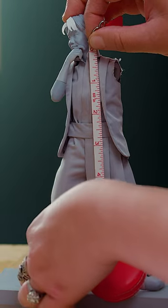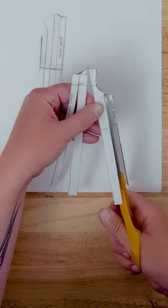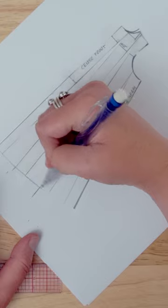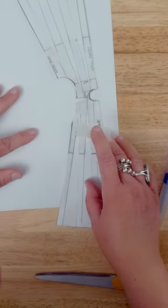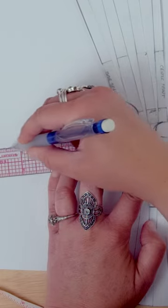I'm going to add some length. This will add fullness to the bottom. Now I need to create a sleeve here, and it should be about four inches long.